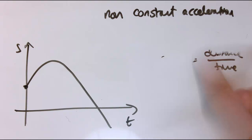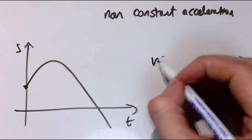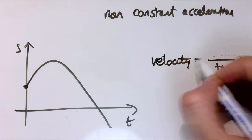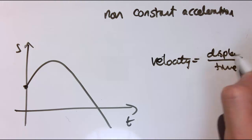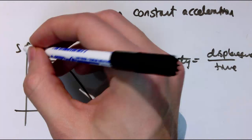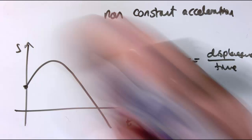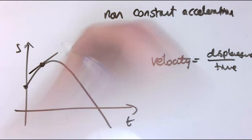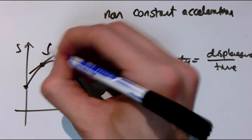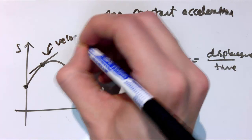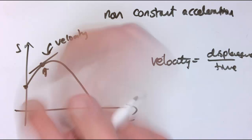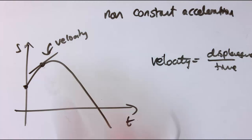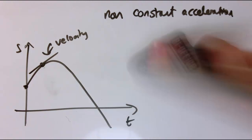And actually velocity, the vector equivalent, is telling us how much the displacement is changing with time. So actually, the velocity on the displacement time graph is the gradient. So actually if I draw a tangent here, the gradient of this line is the velocity at this point, at this point in time.